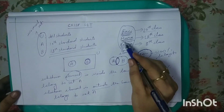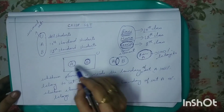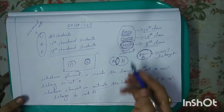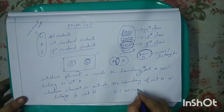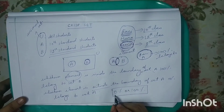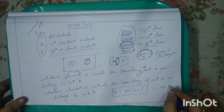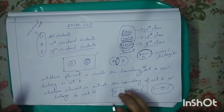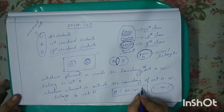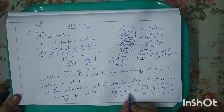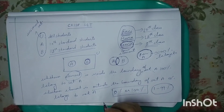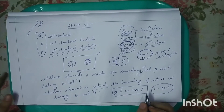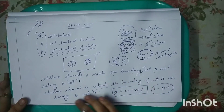Rina doesn't belong to set A or set B because she is not from 10th or 12th class — she is from 8th class. In a crisp set, membership can either be 0% or 100%. It cannot be any number in between — 99%, 50%, or anything between 1 and 99% is not allowed. It should be either yes or no, true or false, 0 or 100%. This is about the crisp set.